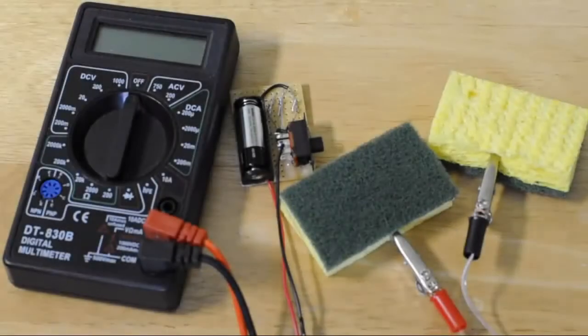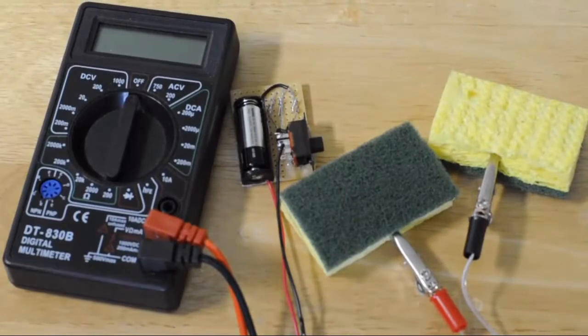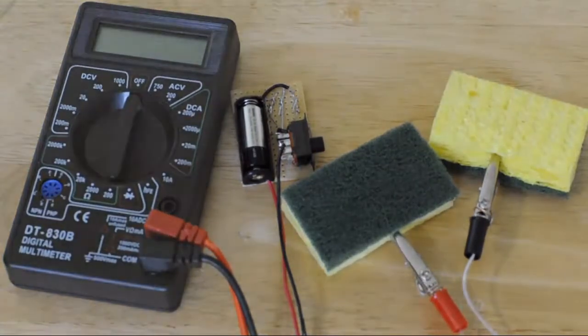Now it's time to measure the amount of electricity the TDCS device gives out so that we don't shock our brain with too much electricity. To accomplish this, we're going to use a multimeter.